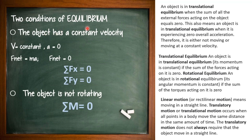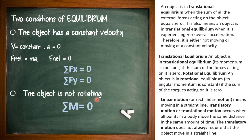Two conditions of equilibrium. First, the object has a constant velocity — when an object has a constant velocity, its acceleration is equal to zero. Therefore, from the formula Fnet = mass times acceleration, and acceleration is zero, Fnet is also equal to zero. Therefore, the summation of forces at x is equal to zero and the summation of forces at y is equal to zero. The second condition of equilibrium is the object is not rotating — the summation of moments is equal to zero. An object is in translational equilibrium when the sum of all external forces acting on the object equals zero, meaning zero overall acceleration.